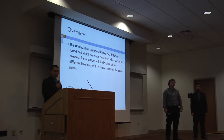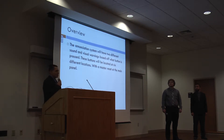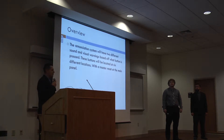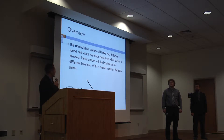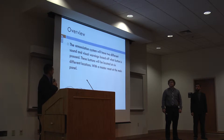An overview of our project: the enunciation system will have two different sound and visual warnings based on what button is pressed. There will be six stations in total — two stations on the north side of the wall, two stations on the south side of the wall, one at the west, and one at the east. On the east side of the wall is where our main panel will be, and we'll have a master reset button at the main panel.